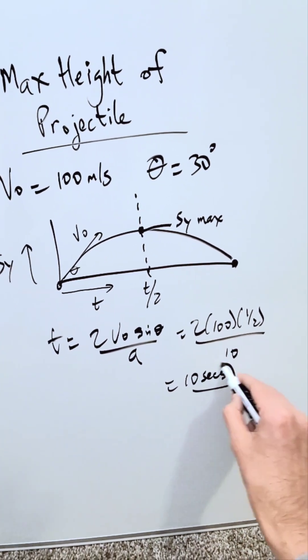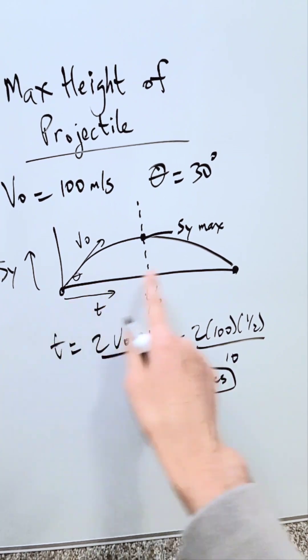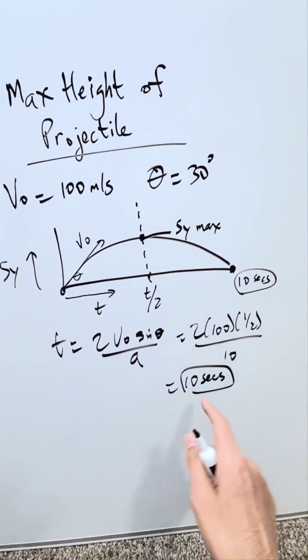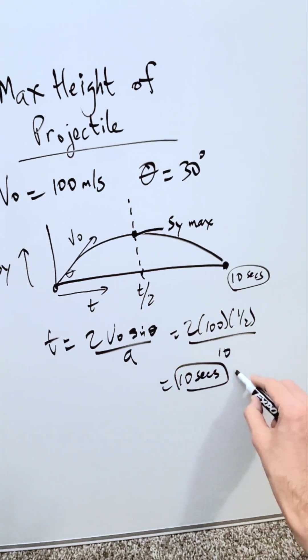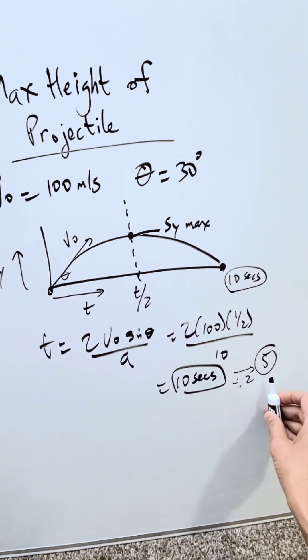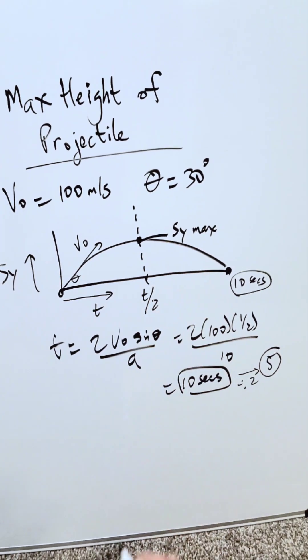You'll get over here 10 seconds. This represents the maximum time in flight. From time 0 to time here 10 seconds, your object remained in motion and it landed. The midpoint of that would be 5 seconds. At this 5 second mark is where we'll have the maximum height achieved.